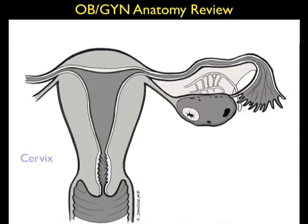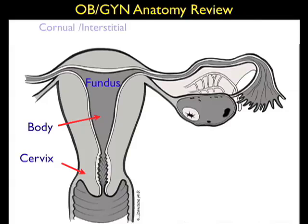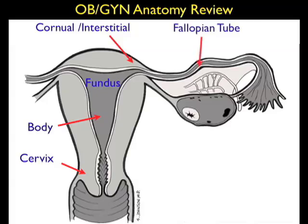Before launching into the sonographic findings of a normal intrauterine pregnancy, let's take a moment to quickly review the OBGYN anatomy important for this application. We see the uterus to the left and adnexa to the right. Notice the areas of the uterus: the lower cervix, the intermediate body, and the fundal region towards the top of the uterus. The fundal region is where we define an intrauterine pregnancy to be located.